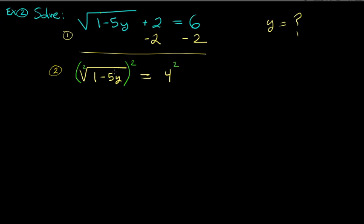Step two: get rid of the square root by squaring both sides. Squaring the left cancels the square root and leaves us with 1 minus 5y. On the right, 4 squared is 16.